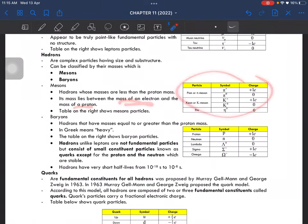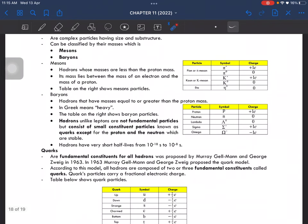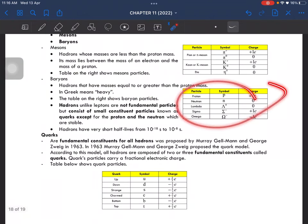The mass lies between the mass of an electron and the mass of a proton. Baryons are hadrons that have masses equal to or greater than the proton mass. In Greek it means heavy. Unlike leptons, they are not fundamental particles but consist of smaller constituent particles known as quarks, except for the proton and neutron which are stable.